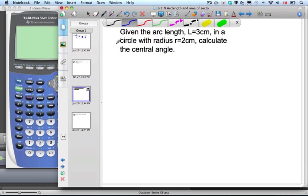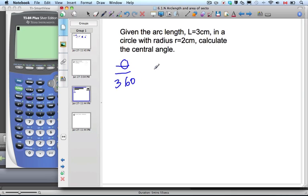Hi there, it's Mrs. Flynn and Mr. Robs. And we're here to continue with another example. Right. Given arc length L is 3 centimeters in our circle with a radius of 2 centimeters. Calculate the central angle. All right. So we know from before that if we look at part to whole, it's θ compared to 360 and L, the arc length over the circumference. All right. All we have to do is substitute in our values.